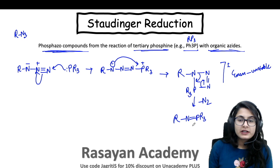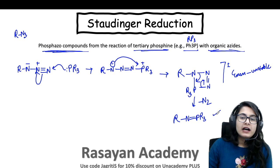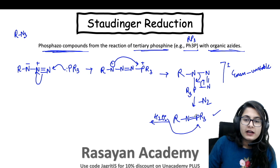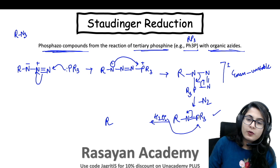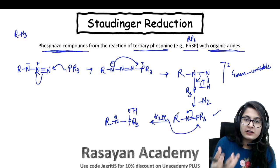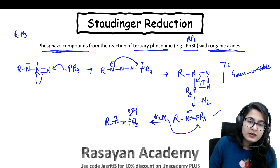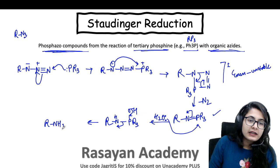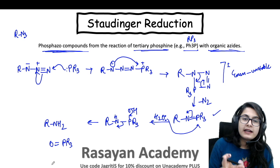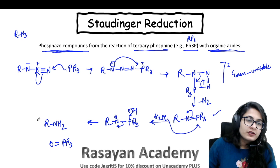Phosphorus can expand its octet — it can form five bonds — and that is why it is able to give this iminophosphine compound. Now water is going to attack on this molecule, and it attacks on phosphorus, not on nitrogen. So the bond falls over nitrogen. You can directly write a P–OH bond and give a proton to the NH. The oxygen–hydrogen bond falls on the phosphine, one more bond eliminates to give you the amine as well as a phosphine oxide.